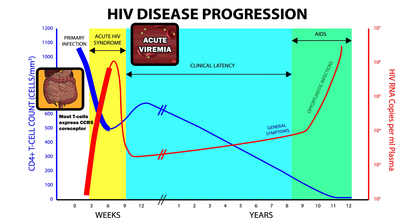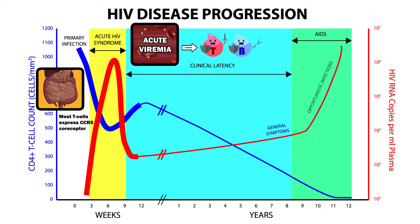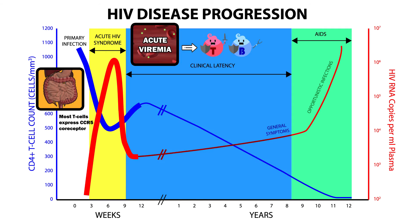This acute viremia — that is, virus presence in the blood — typically results in the activation of CD8-positive cytotoxic T-cells, as well as B-cells. The cytotoxic T-cells kill infected cells, and B-cells produce antibodies. This counterattack lowers the amount of viral replication. T-cell counts rebound, though not to pre-infection levels. The infected individual now enters the chronic phase.